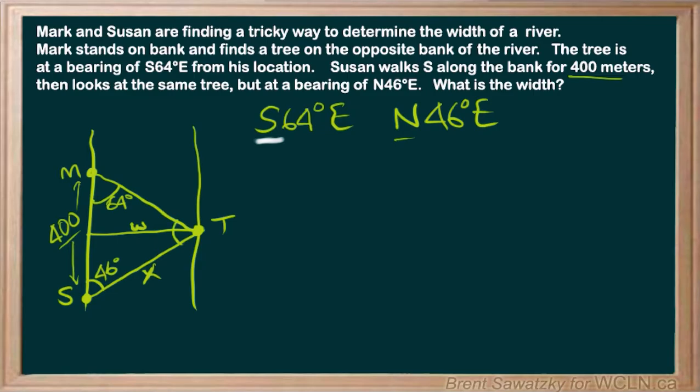Well, at this point, we don't. But it looks like we could figure this out. Let's call that alpha. And if this is 64 up here, then that means that this must be 64 degrees in there. And if this is 46 there, then that means this must be 46 in there.